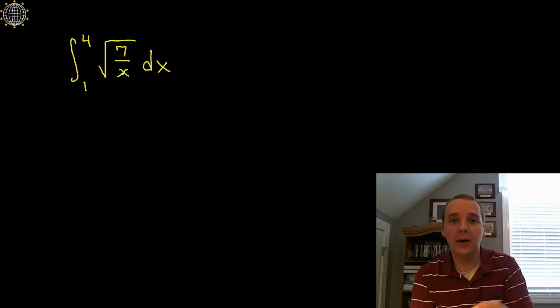In this example we're going to try to find the area under the curve from 1 to 4 of the square root of 7 over x.